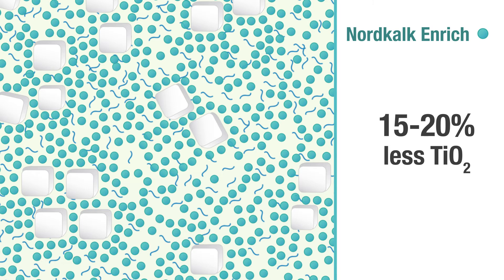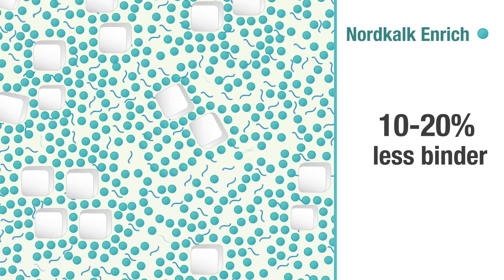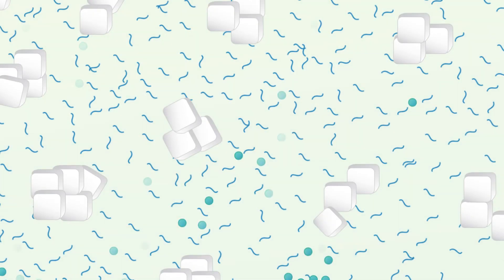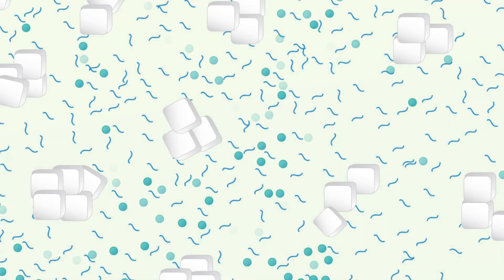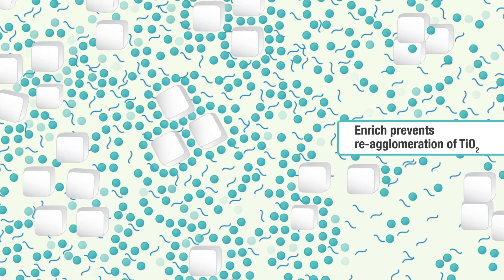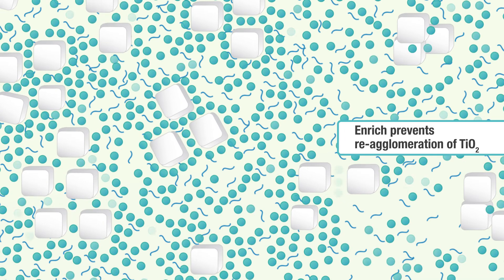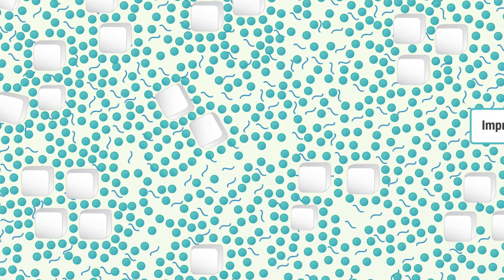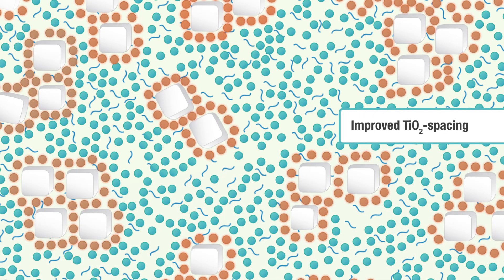Further optimisation of the paint formulation enables up to 10–20% savings in binder. Thanks to a smaller particle size than titanium dioxide, the ultrafine enriched particles keep the pigment particles from crowding, since they tend to be carried into the free voids in the paint mixture, thus resulting in the most efficient titanium dioxide spacing effect.